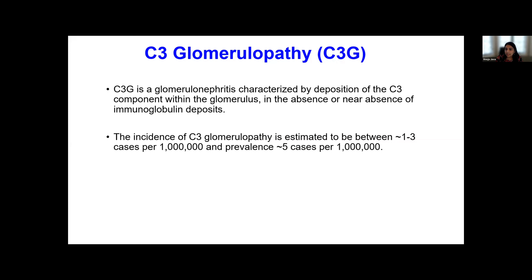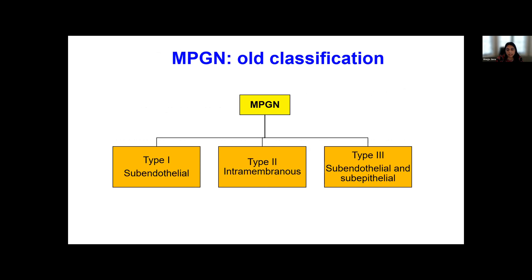Now, even though I say that, I will say that the incidence and prevalence is really guided by the regional biopsy practices and the referral practices. So I take these numbers with a little bit of grain of salt. But overall, C3G is a rare disease. It's a prototypical complement-mediated disease. And C3G really came out of MPGN, which was the old classification.